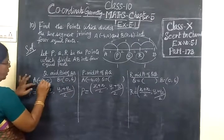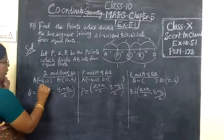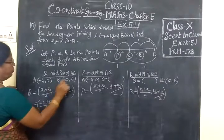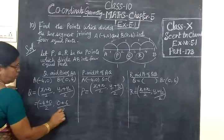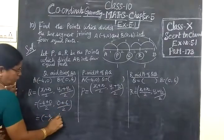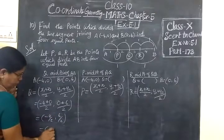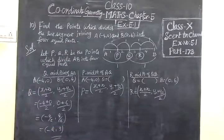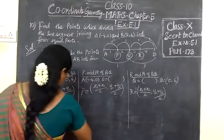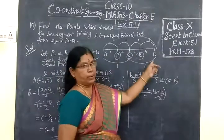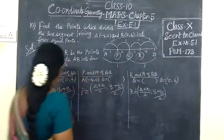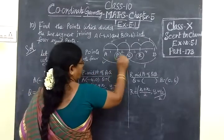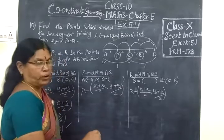So for that we are using the midpoint formula. A is X1, Y1, B is X2, Y2. X1 is minus 4 plus X2, 0 by 2. Then Y1, 0 plus Y2, 6 by 2, equals minus 4 by 2, 6 by 2, equals minus 2, 3. So Q is the midpoint of AB with value minus 2, 3.